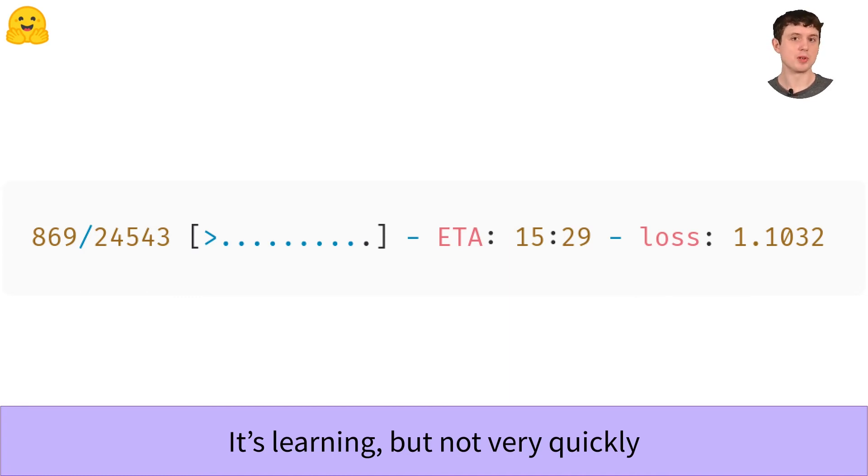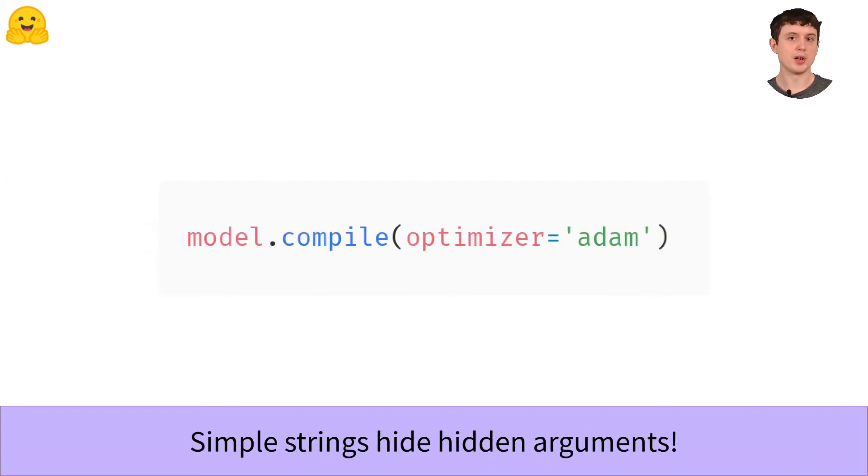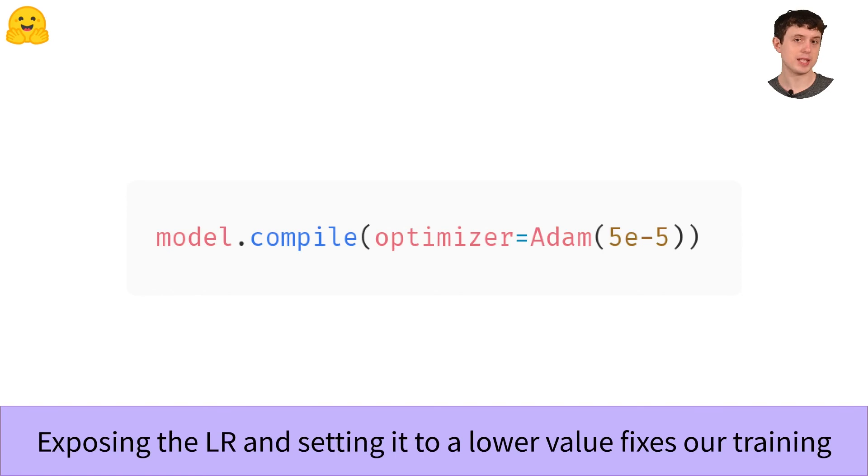This is one of the most common sources of issues when working with Keras. You can name things like optimizers with strings, and Keras supports that and it's very convenient. But if you do that, all of the options get silently set to their default values. We specified our optimizer as Adam, but in the process we invisibly got the default learning rate, which is 1e minus 3, or 10 to the power of minus 3. This learning rate is way too high for training transformer models. We should go back and specify the learning rate directly, not using a string. Good values are between 1e minus 5 and 1e minus 4. Let's split the difference and pick 5e minus 5. If you recompile with that, you'll find that training actually works at last. The loss goes down efficiently and it converges to a lower value.